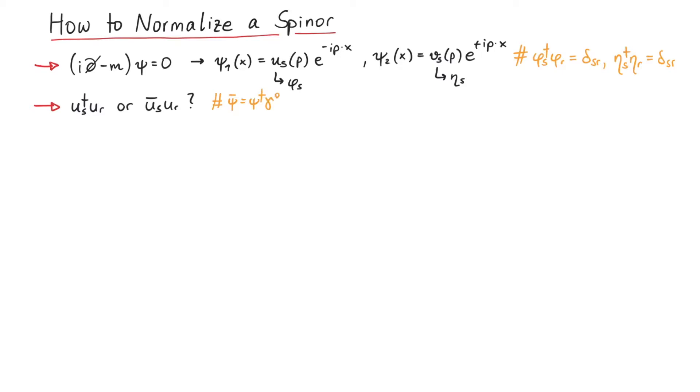Fortunately, we have some constraint. The physical condition that the probability of finding the particle somewhere should be Lorentz invariant. This probability is the integral over d3x over the zero-component of the probability current, j mu.